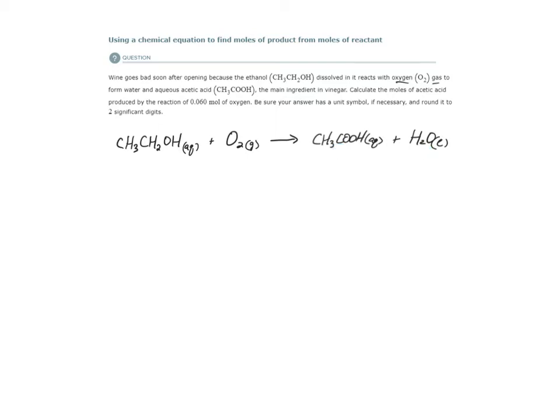Once we have the chemical equation, we have to balance it. Is it balanced? Let's give it a quick check. Two carbon atoms over here, two carbon atoms over here. Six hydrogens, six hydrogens. Three oxygens, three oxygens. Fortunately, it's already balanced for us.